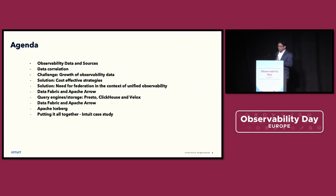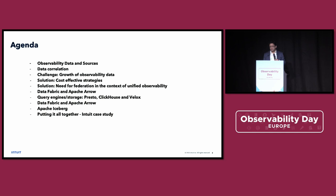The agenda for today: the theme is doing federated search over distributed data. As observability scales up, we are dealing with huge amounts of data that's diverse. We're going to look at the different data challenges that are there and some of the solutions. The idea is that instead of reinventing a solution for these problems, why not leverage what's already been done in similar areas?